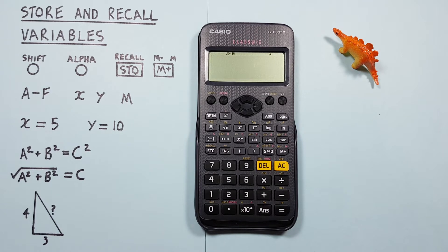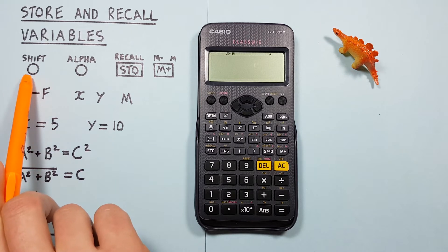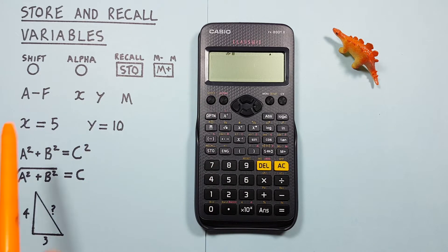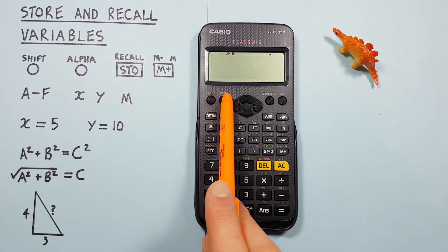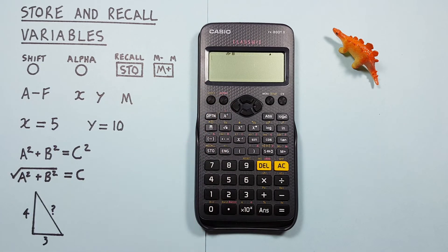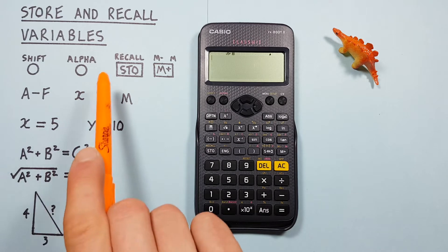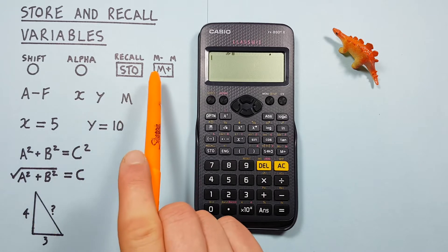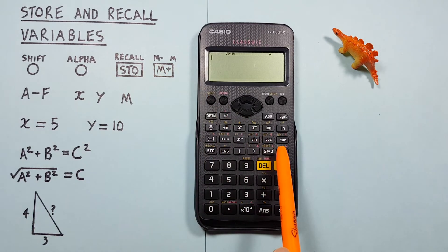To do this we'll be using the shift key that looks like this located here, the alpha key that looks like this located here, the store and recall key that looks like this located here, as well as the independent variable or M key that looks like this located here.